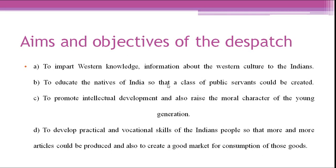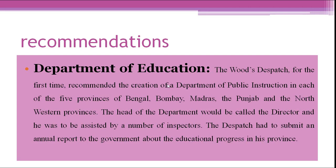The first recommendation concerns the Department of Education. Wood's Dispatch for the first time recommended the creation of a Department of Public Instruction in each of the five provinces — Bengal, Bombay, Madras, Punjab, and the North-Western Provinces. The head of the department would be called Director, assisted by a number of inspectors. The department had to submit an annual report to the government about educational progress in its province.